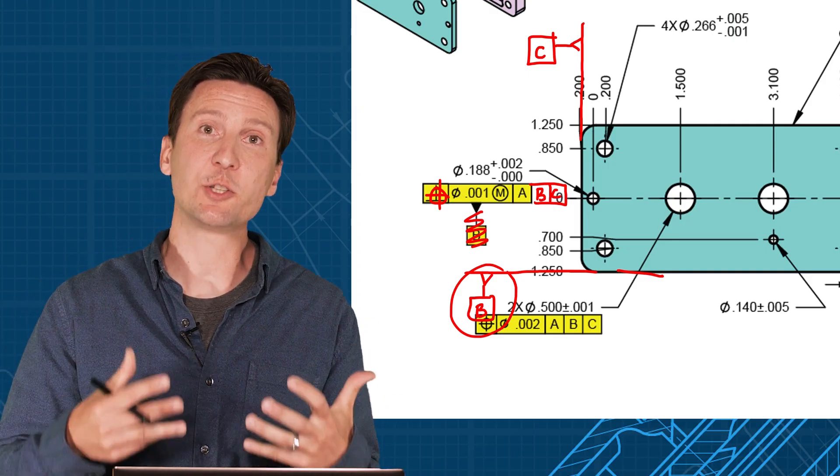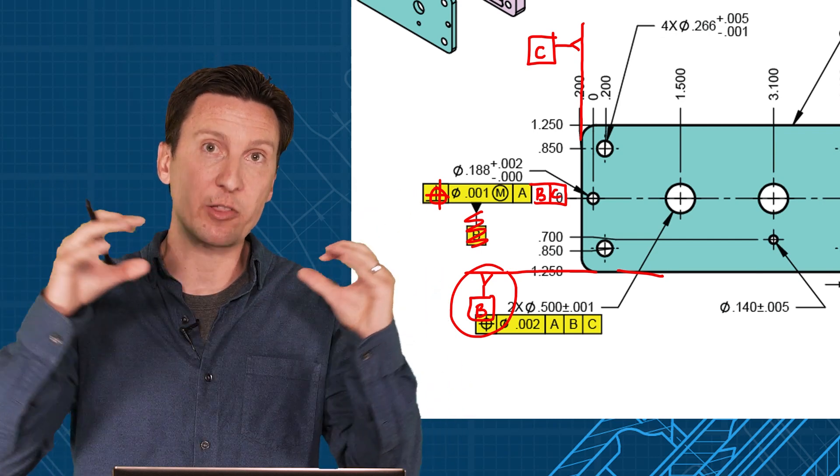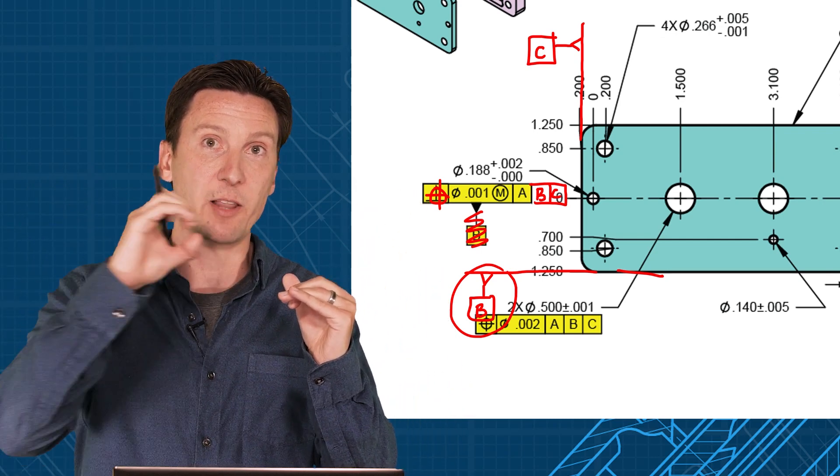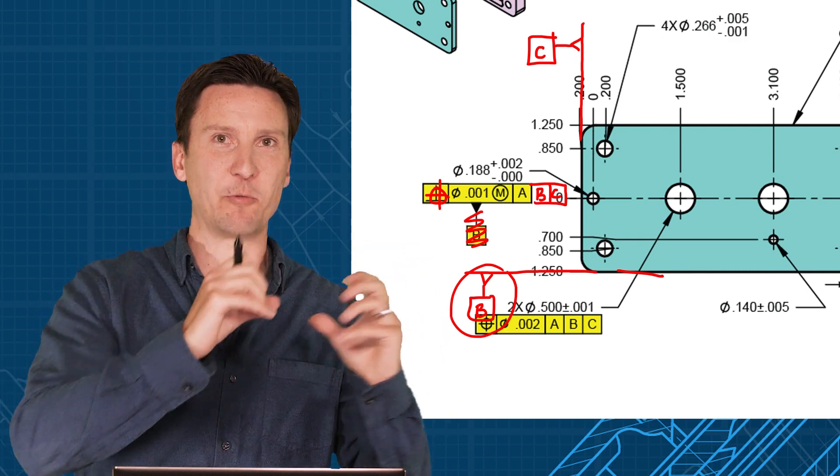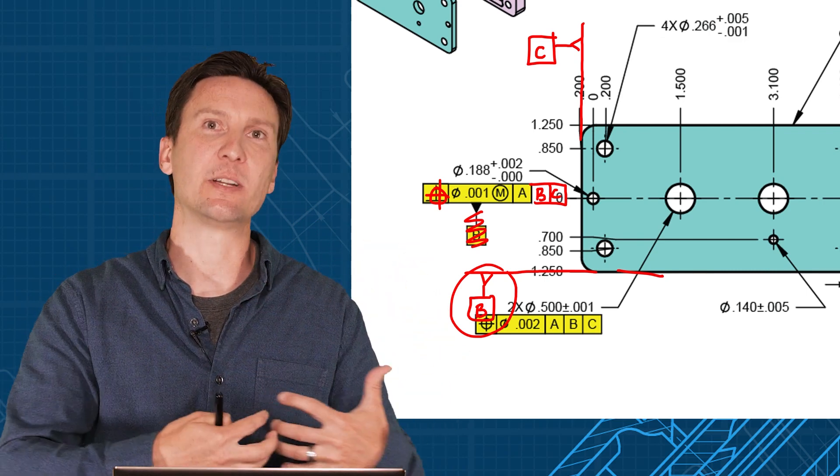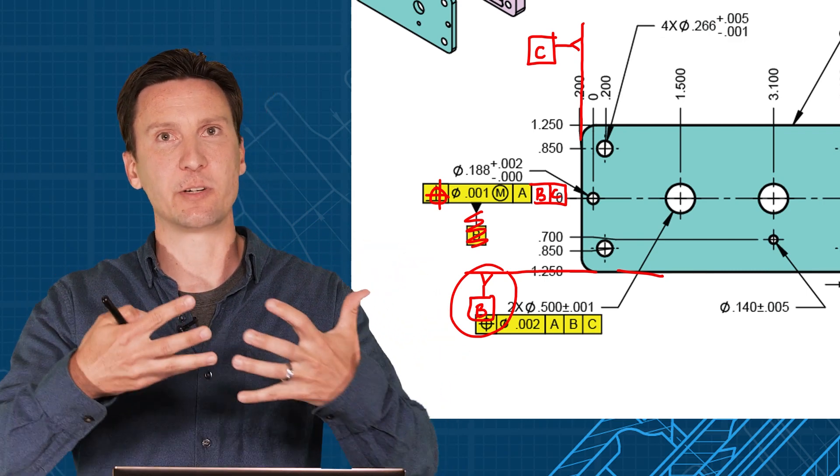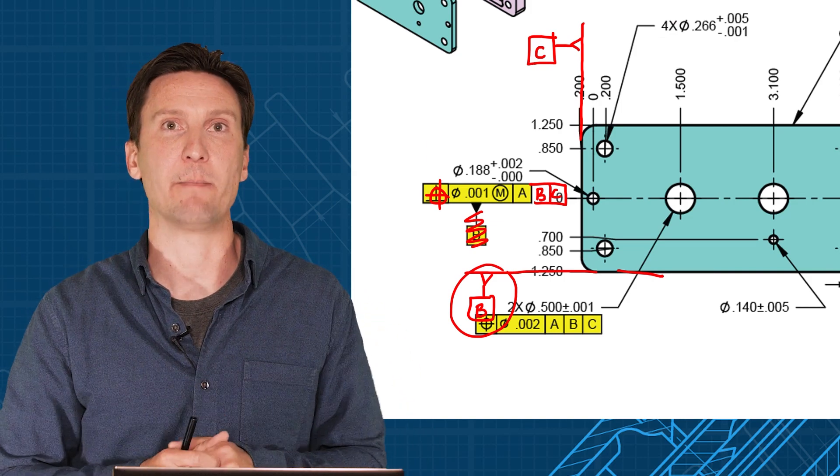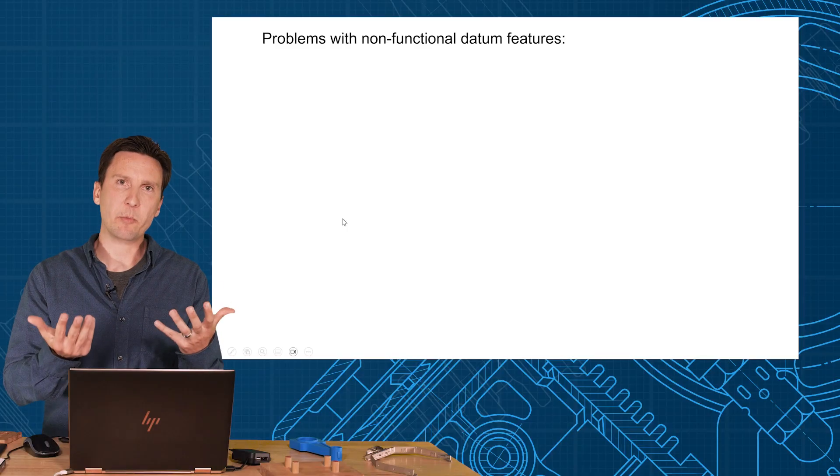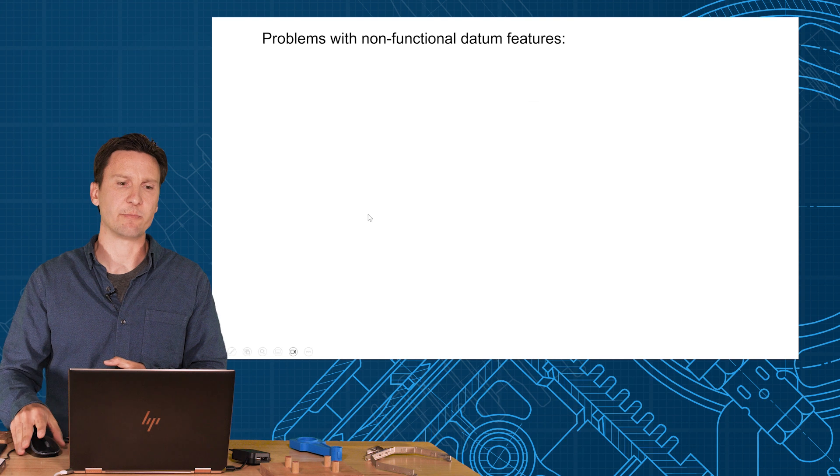But if I pick my functional datum features and tolerance everything related to that, when somebody says hey this hole is too much to the left or the right, that's exactly how it performs in the assembly. So your inspection data is more meaningful to you because you're getting data that reflects the same way that it mounts in the assembly. So let's summarize the problems of the non-functional datum features.